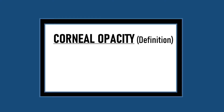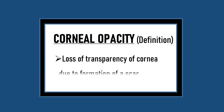Corneal opacity refers to the loss of transparency of the cornea due to the formation of a scar. The cornea can lose its transparency due to any cause that disturbs its structure, like corneal edema, corneal dystrophies, or corneal degenerations. But under this topic we will specifically talk about opacities that form due to healing or scarring.